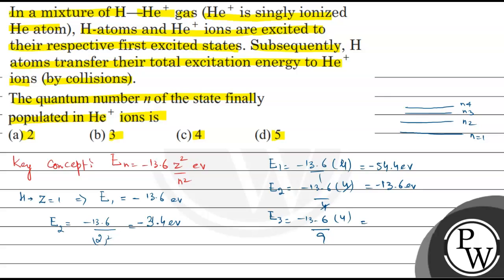When we calculate it, it will be minus 6.04 electron volt. So when we calculate E4, it will be minus 13.6, Z square is 4, upon 16. So here it will be minus 3.4 electron volt.